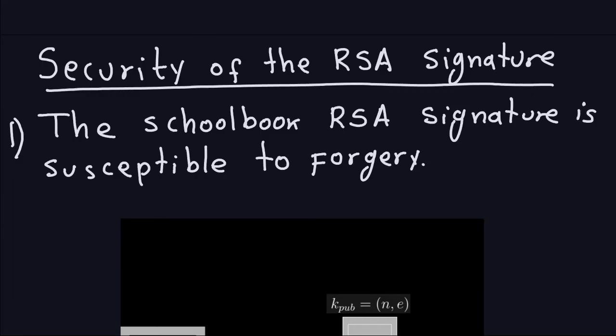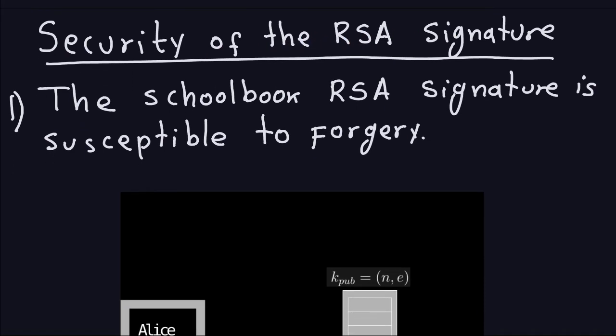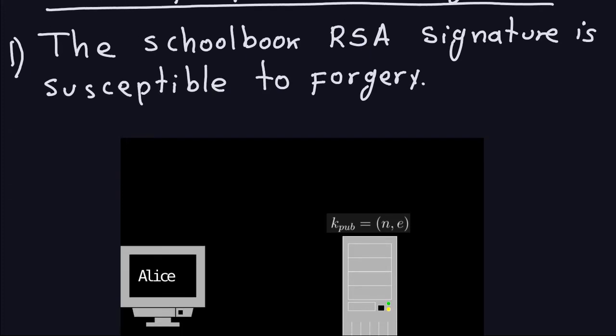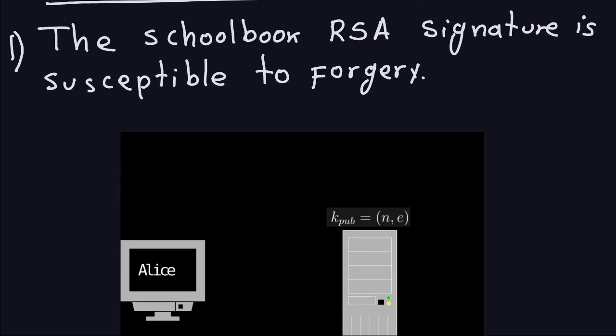Hello and welcome again. In the last video we started talking about the security of the RSA signature, and I mentioned that the schoolbook RSA — which is just the one that we just saw — is susceptible to forgery.